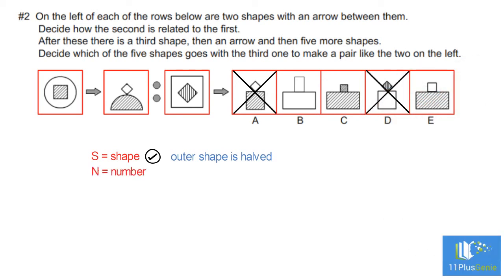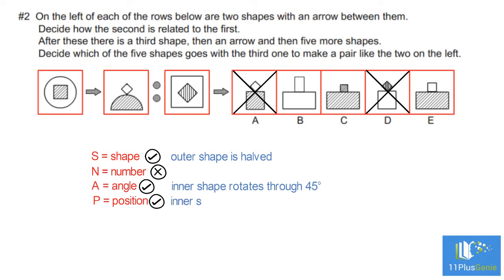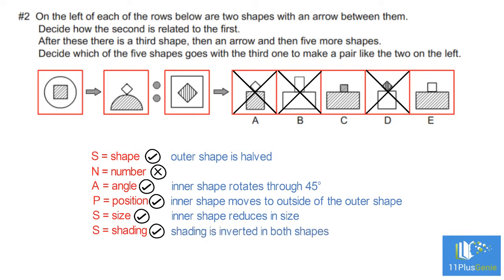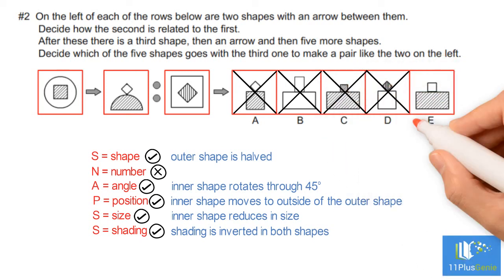N — Number: there is no change in the number of shapes or sides. A — Angle: the inner shape rotates through 45 degrees. P — Position: the inner shape moves to the outside of the outer shape. We can eliminate B because a rectangle has been moved incorrectly. S — Size: the inner shape becomes smaller. S — Shading: colours are inverted in both shapes. We can eliminate C because the square must be white. The correct answer is E.